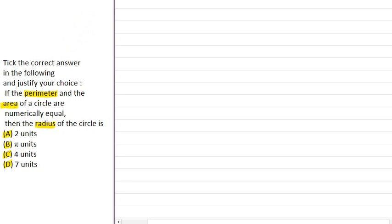Let's see what is given. We are given here that area of the circle is equal to perimeter of circle.